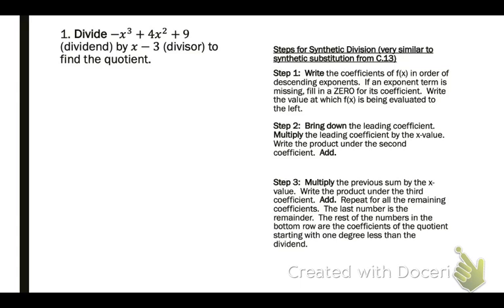So look at the steps for synthetic division. Notice the problem says divide that first polynomial by the second one. Step one, write the coefficients in order of descending exponents. If we're missing an exponent term, we have to put in zero as a placeholder. I notice that I'm missing an x term in my polynomial, so I'm going to have to put a zero in. So I pull the coefficients off, which is negative one, four, zero, and nine. And then out to the side, I put my divisor, but it's what number is being subtracted. In this case, it's a positive three that's being subtracted. I always take the opposite sign.